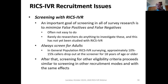Screening with IVR is another recruitment issue. An important goal of all screening in survey research is to minimize false positives and negatives, yet rarely do researchers do anything to investigate this, and to date this has not been investigated with RICS IVR. RICS IVR always screens for adults; in general population surveying, approximately 10–15% of callers drop out at the age screening point. After that, any kind of screening that can be done with other surveying can essentially be done with RICS.